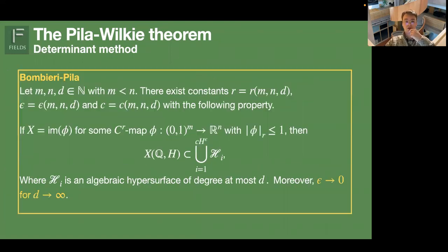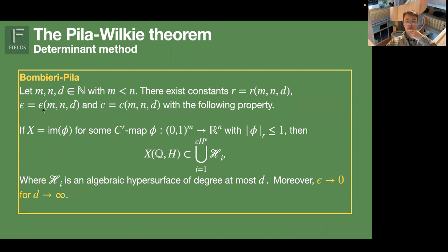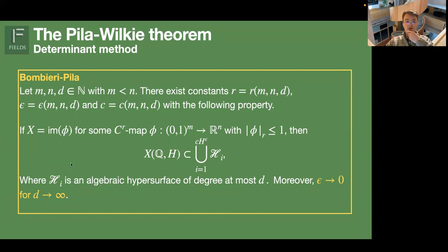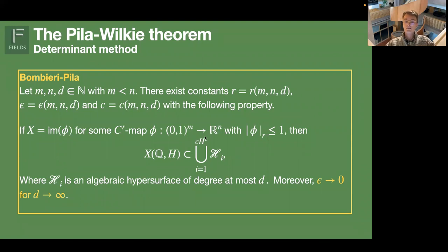Here is a more precise statement of the determinant method, developed by Bombieri and Pila. The input is combinatorial data: natural numbers m and n — interpret m as the dimension of X and n as the dimension of the ambient space — and d as the degree of the hypersurfaces you want to use, all fixed in advance. The proposition gives you some constant r, an epsilon, and a c with certain properties. You are given a map that is sufficiently smooth — sufficient means it's governed by the constant r — and all of its derivatives have to be bounded by one.